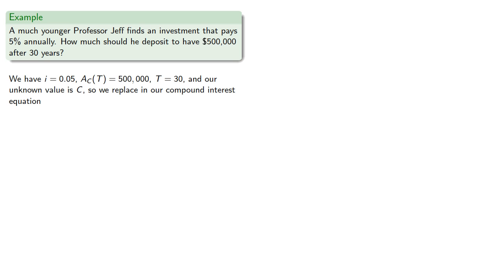So we have our interest rate, 0.05. We have our end amount, 500,000 at t equals 30. And our unknown quantity is c, so we can replace in our compound interest equation and solve. And we find that c is...